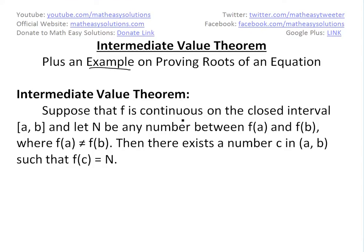Suppose that f is continuous on the closed interval [a, b]. Closed means you include the endpoints — they have to be defined. You can see a video link below on closed and open intervals. Let n be any number between f(a) and f(b), where f(a) is not equal to f(b). Then there exists a number c in the open interval (a, b) — which does not include the endpoints — such that f(c) equals n.